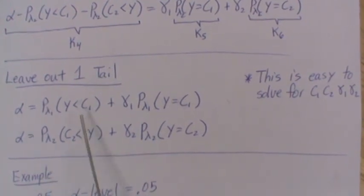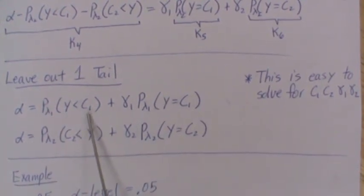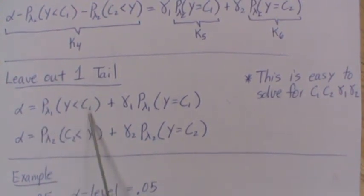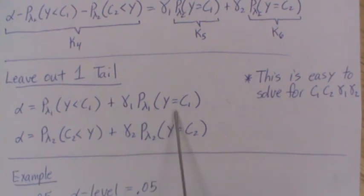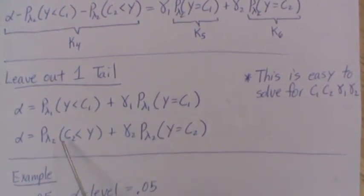So I call it the leave out one tail. And here, we let alpha be the probability that we're in the left tail. So we assume lambda 1 is a true value, and we calculate this. And so this is easy. So you just start, you pick a value of C1, and then you keep increasing it until it just goes over alpha. And then you back it up one, and then that's your C1. And then you can, since this is known, this is known, you can solve for gamma 1. And you just solve for C1.